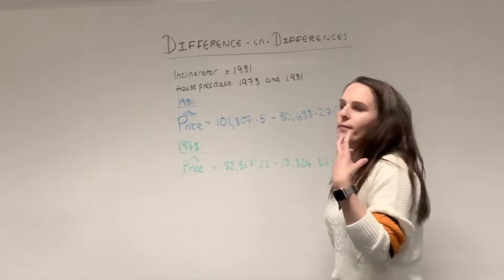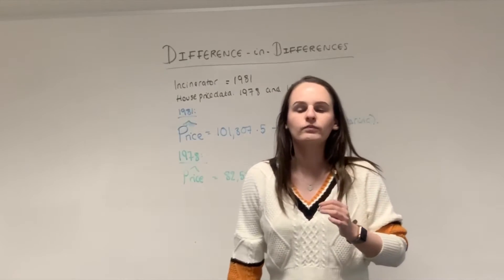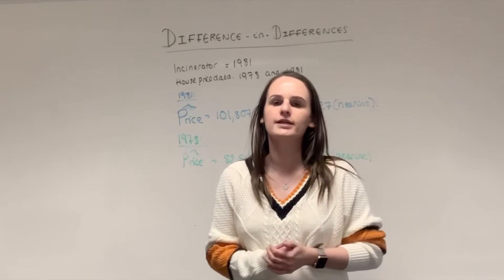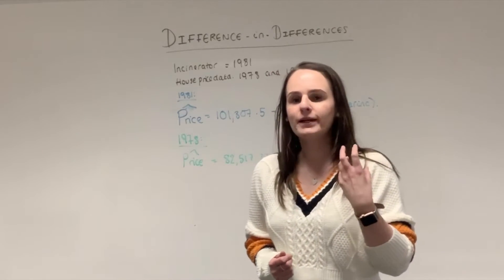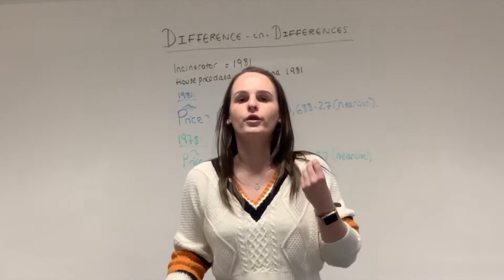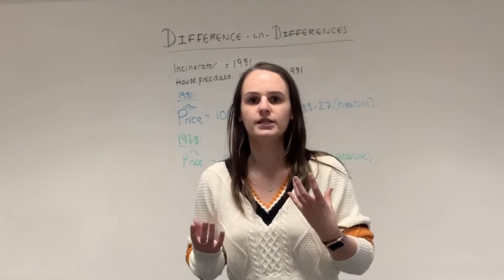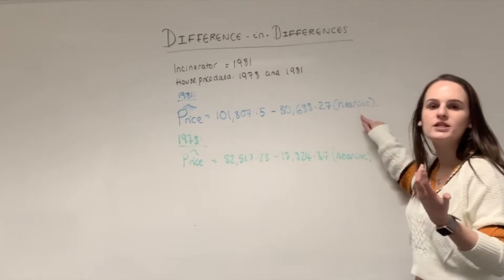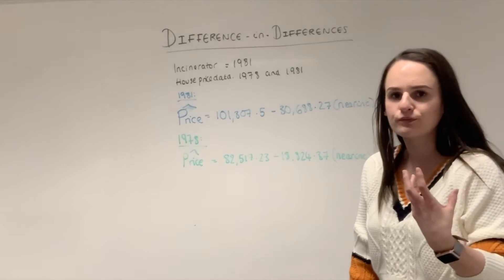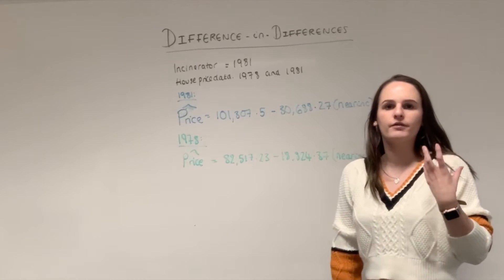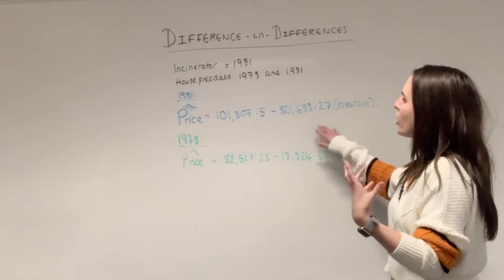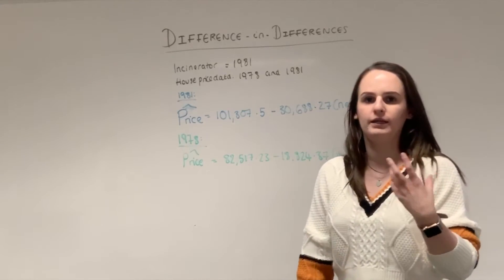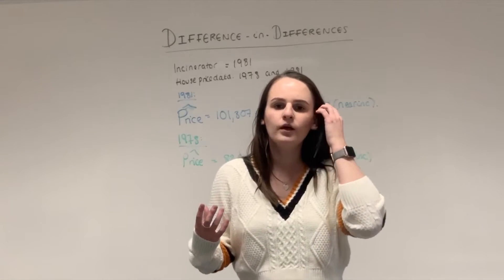We have information that an incinerator was built in 1981, and we have house price data for 1978 and 1981. What typically happens is students run a regression on just the 1981 dataset to see the effect of the incinerator. The regression shown in blue regresses price on 'near incinerator' — a dummy variable equal to one for people living next to the incinerator. The result shows that on average, price falls by £30,688.27 compared to those not living near it.